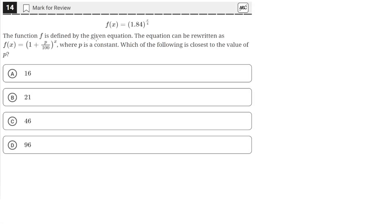The function f is defined by the given equation. The equation can be rewritten as f(x) equals 1 plus p over 100 raised to the x power, where p is a constant. Which of the following is closest to the value of p?